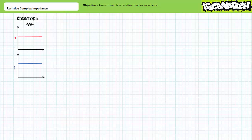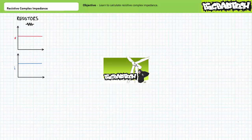Good day and welcome to Big Bad Tech. I'm your instructor, Jim Pytel, and today's topic of discussion is resistive complex impedance. Our objective is to learn how to represent resistors as complex impedances for the purposes of AC circuit analysis. This lecture operates on the presumption that the viewer has more than a passive familiarity with complex numbers, as illustrated in the previous lectures available at the Big Bad Tech channel. If you haven't watched these lectures yet or don't recall their contents, please take the time to do so now.